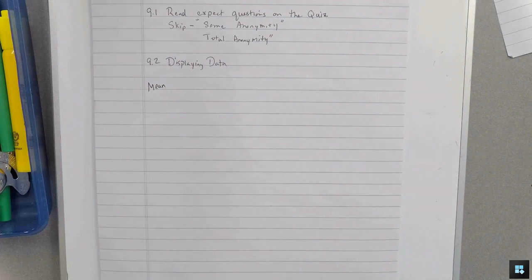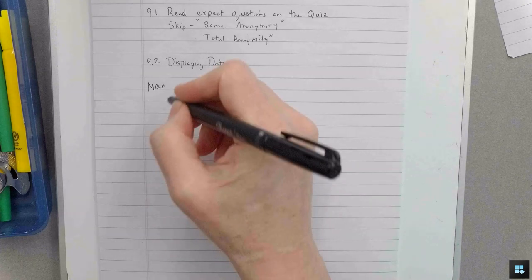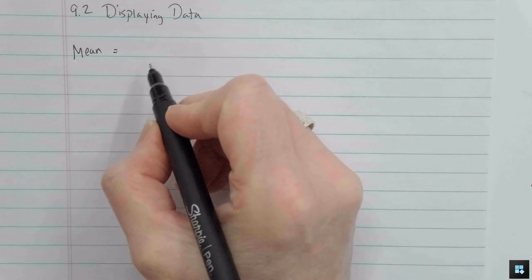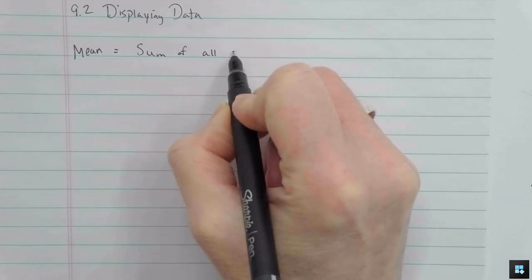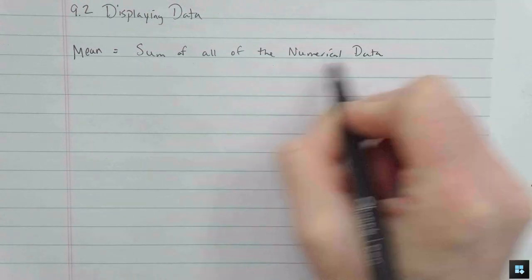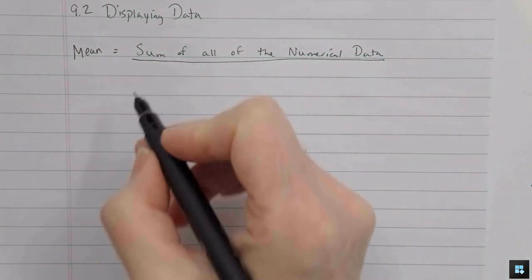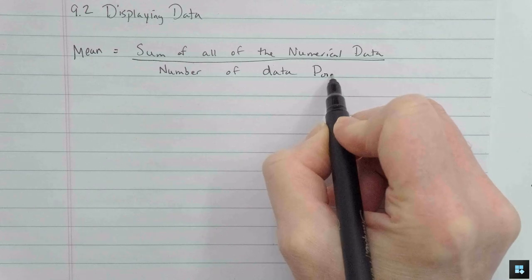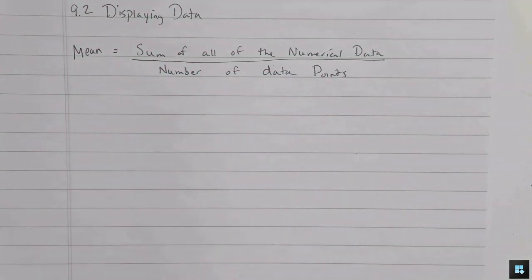But we saw in that Lakeside School example that the average doesn't always help. There's three different ways to describe averages. These were the means. Let's talk about averages in a minute. Who knows how you calculate the mean? Anybody? Yes? You add everything up and divide it by the number of data points that you added up. So the sum of all the numerical data. Divide that by the number of data points. So that's the mean.